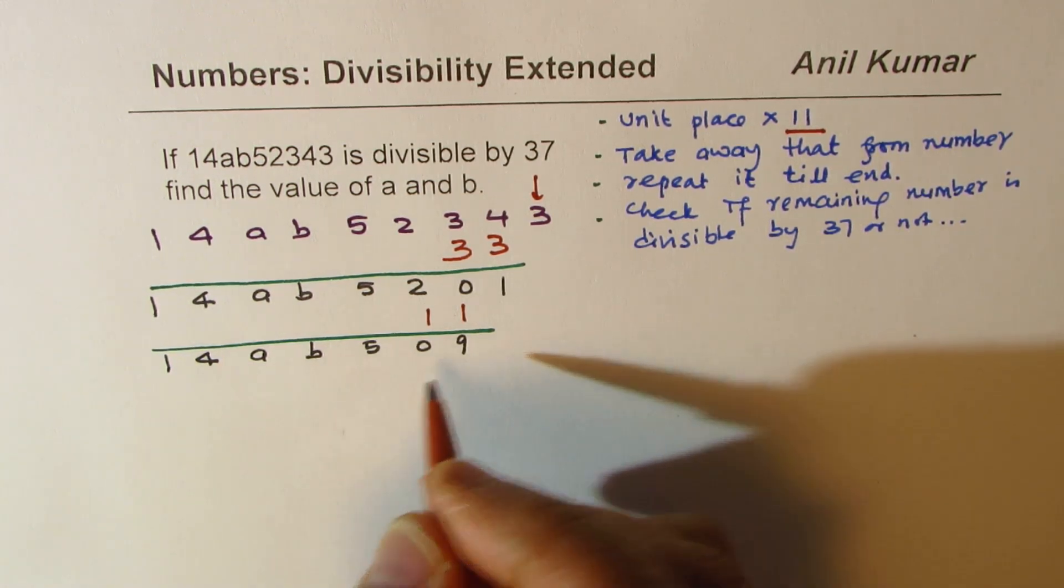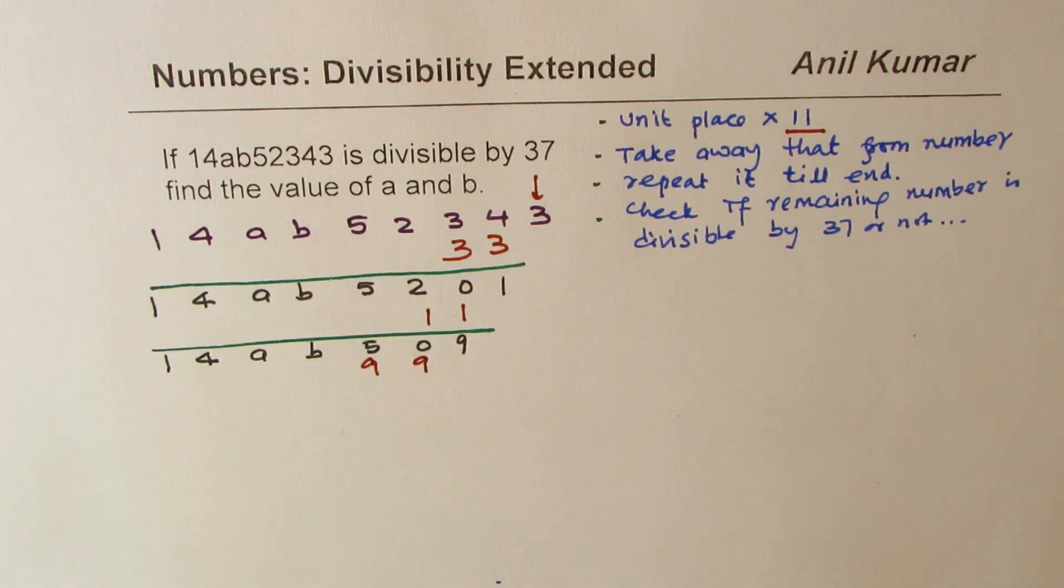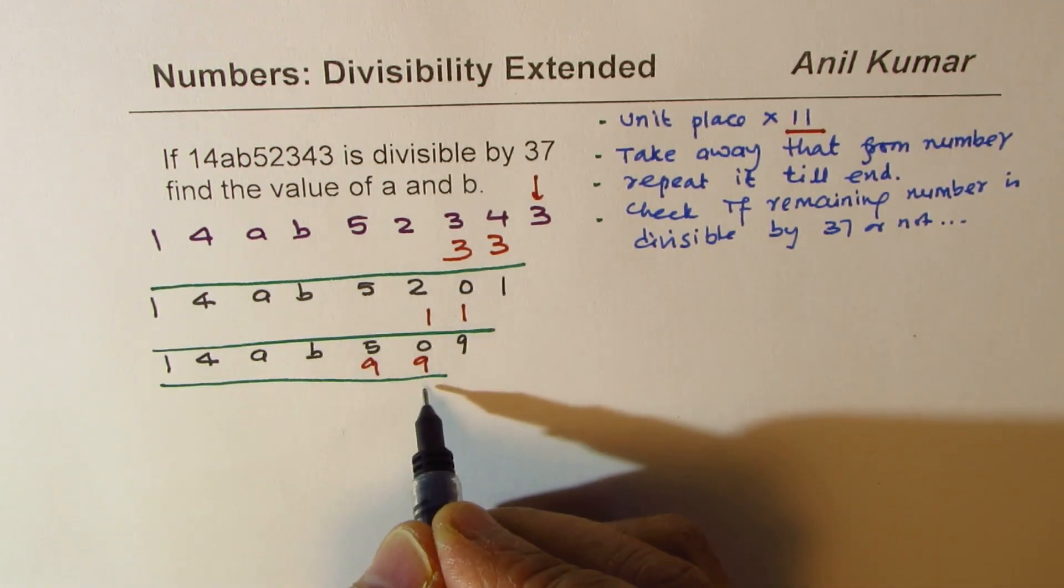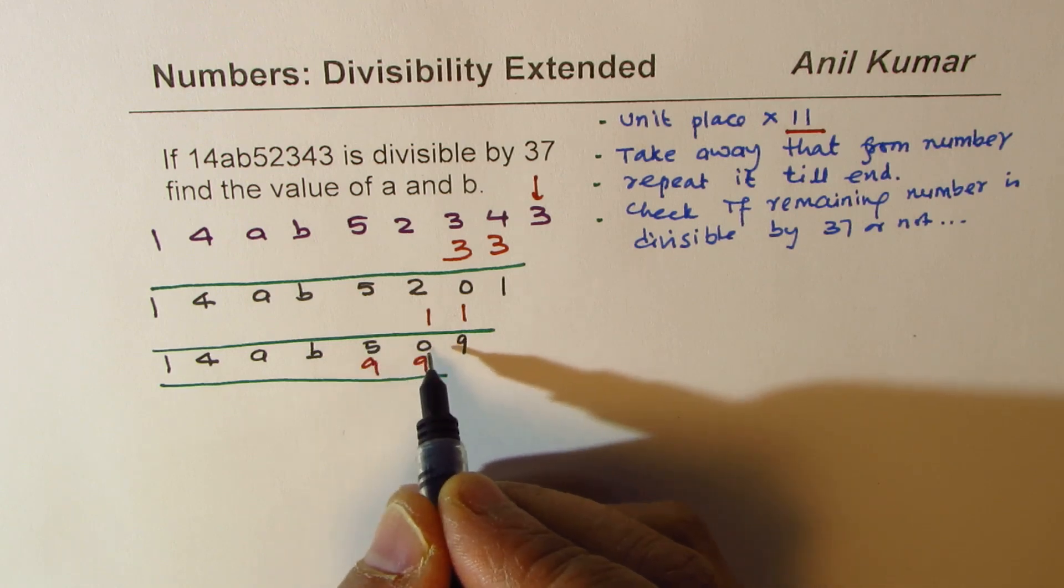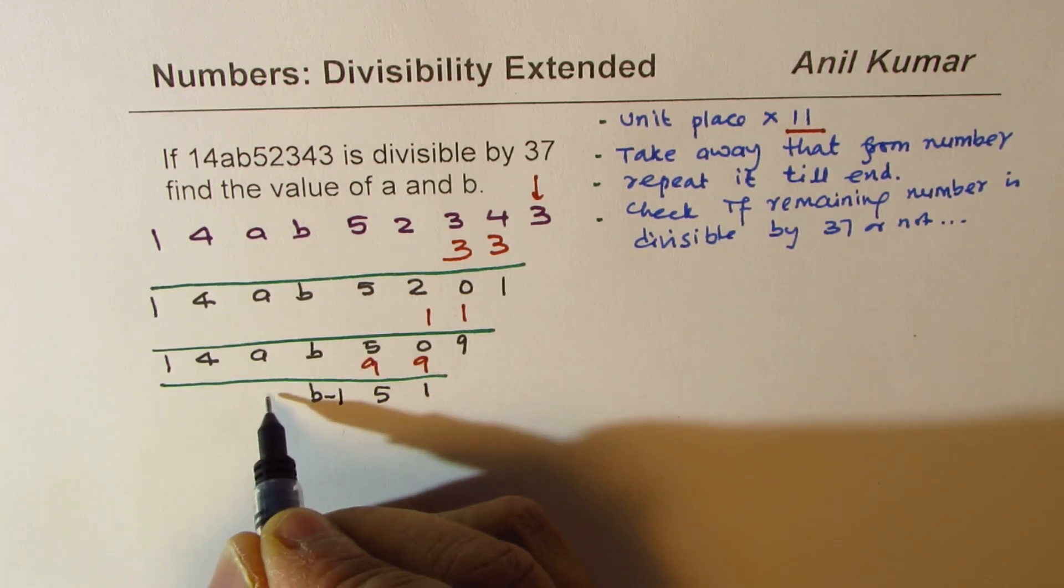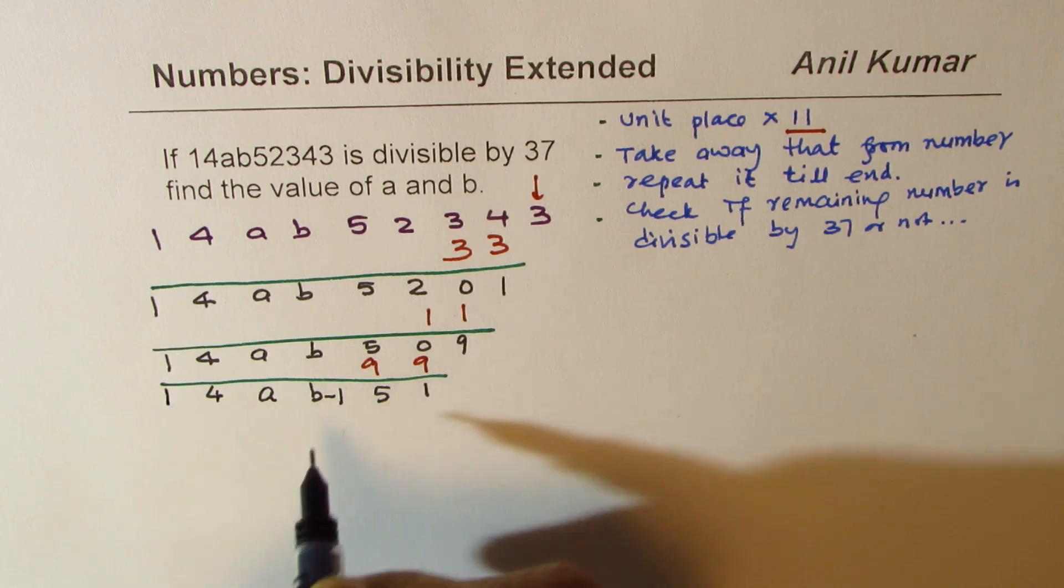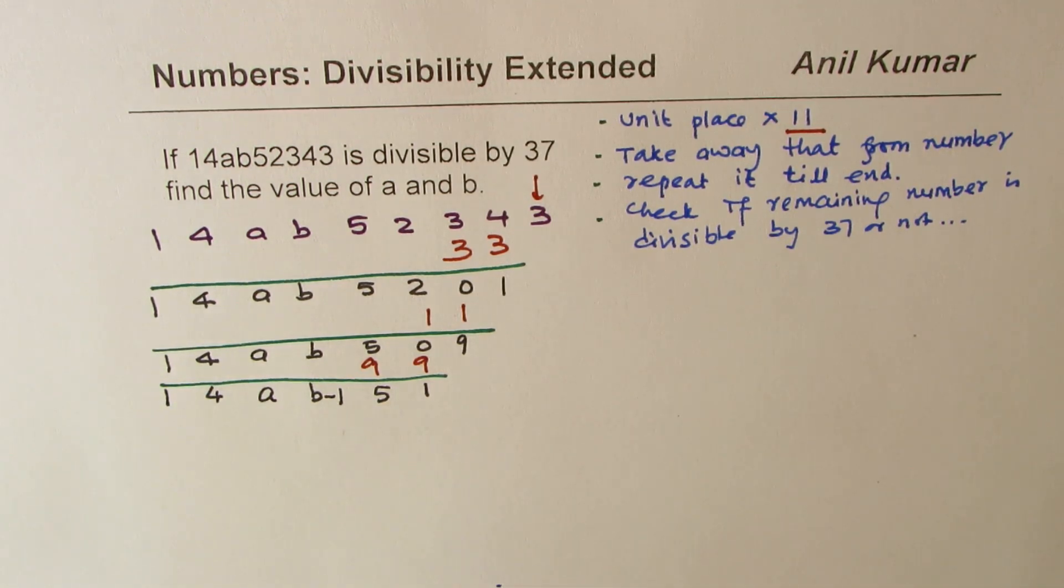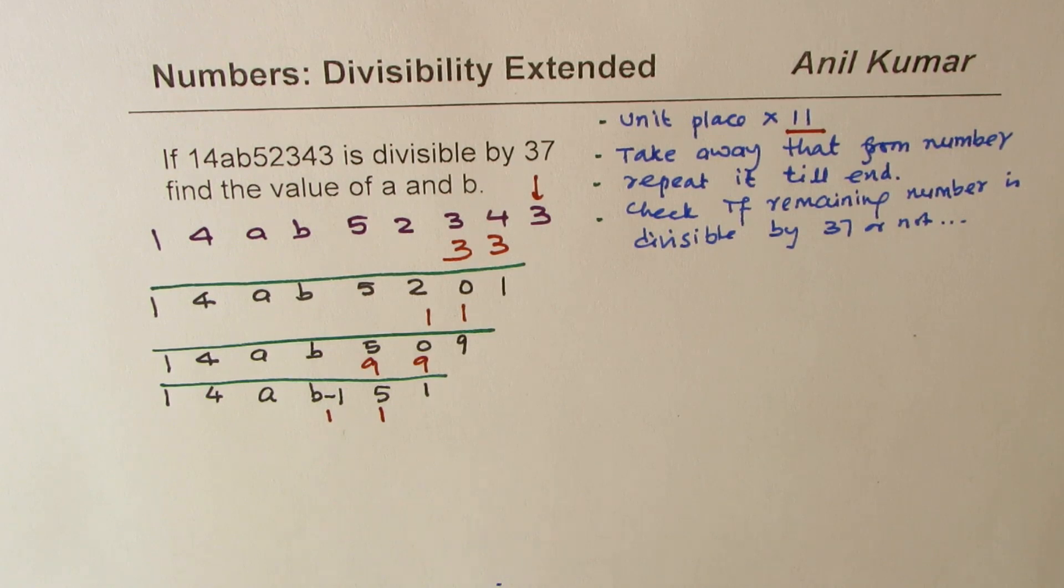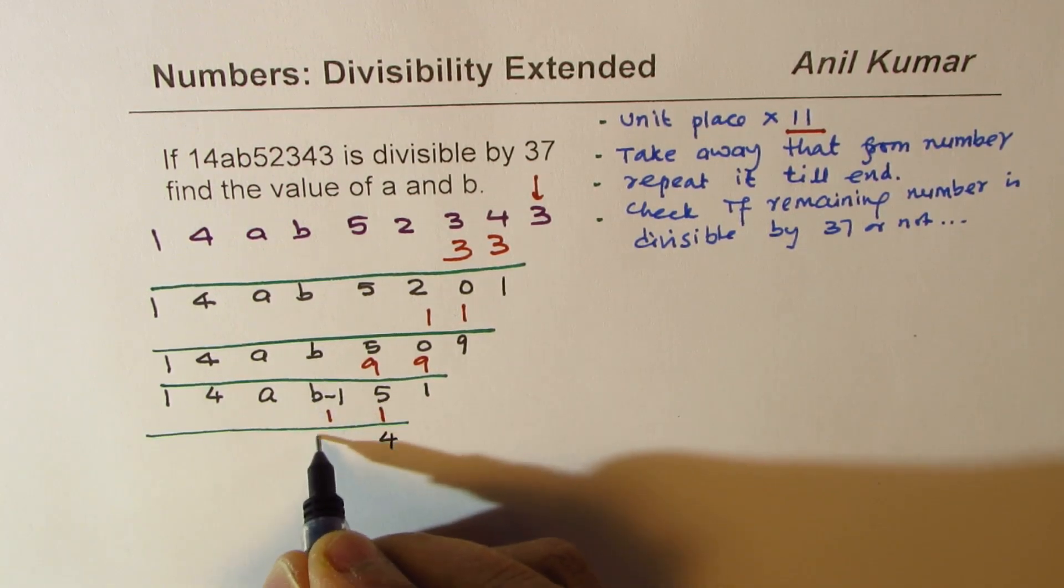This time, 11 times 9 is 99. So we'll take away 99. You're with me on this, right? So 10 take away 9 is 1. We have already borrowed 1, so we got 14. Take away 9 is 5. We borrowed from B, so this becomes B minus 1. That is the complexity involved. And I think that is why the question has come here.